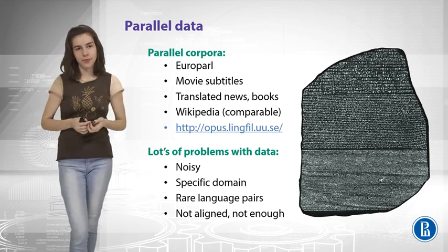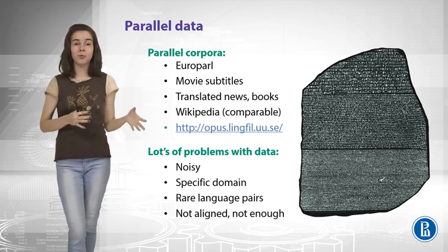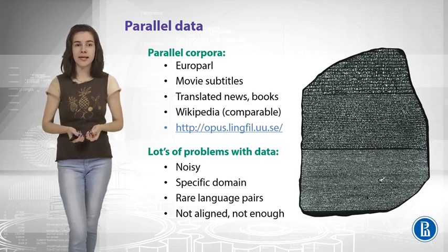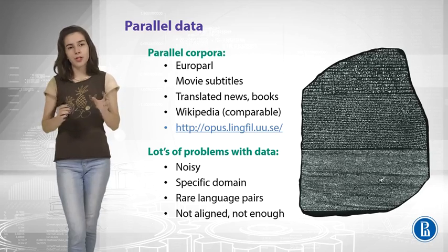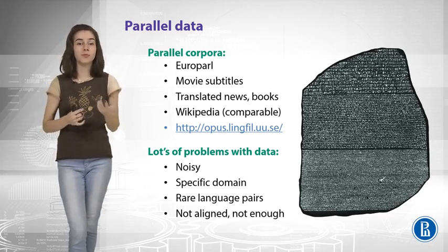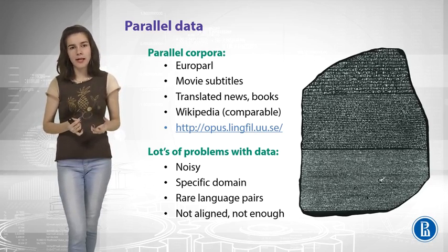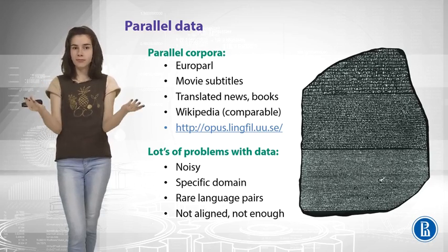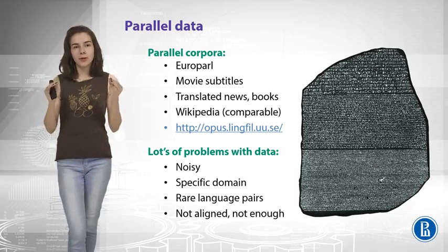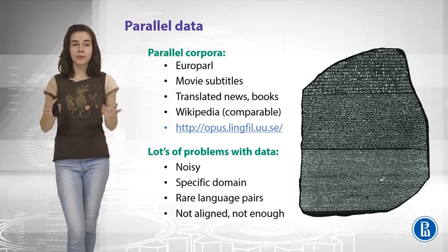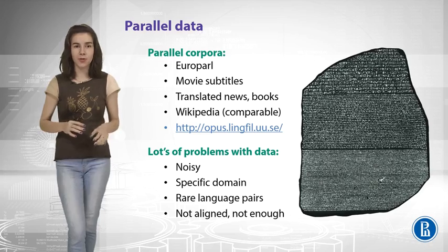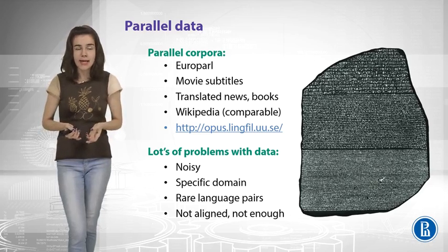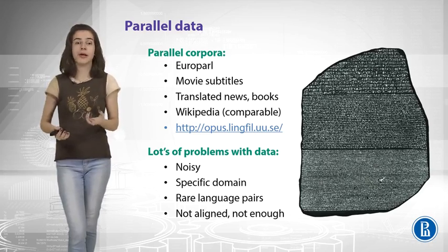Another domain would be movies — you have subtitles translated into many languages. Something also useful would be book translations or Wikipedia articles. For Wikipedia, you cannot guarantee the same text across languages, but you can have similar content — vague translations or at least the same topic. We call these corpora comparable, but not parallel.